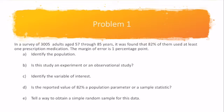Problem one: In a survey of 3,005 adults aged 57 through 85 years, it was found that 82% of them used at least one prescription medication. The margin of error is one percentage point. We need to identify this population. Our population is adults aged 57 through 85 years.